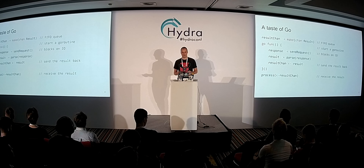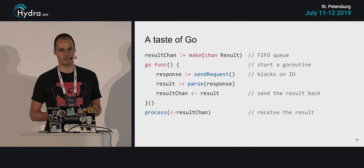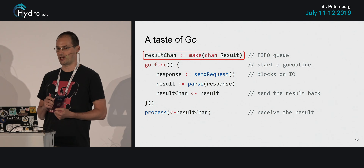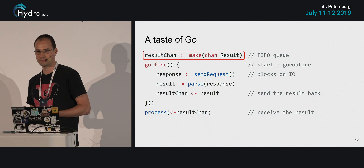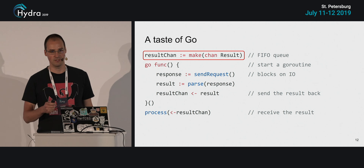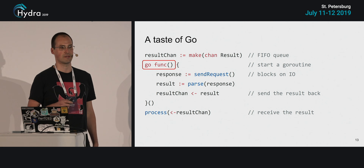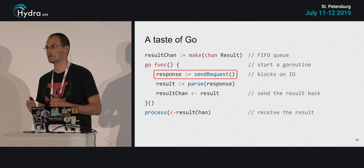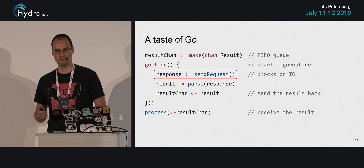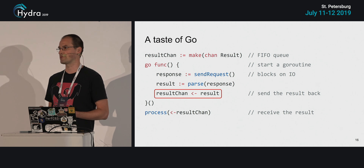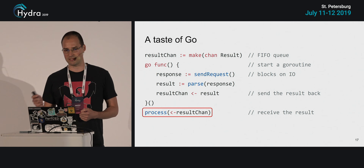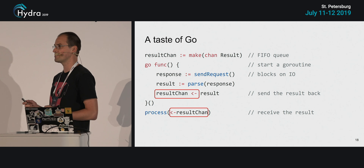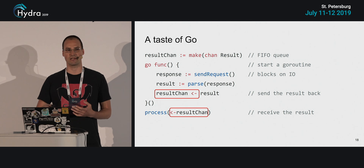To give you a taste of Go, let's look at some real code. On the first line, we create a channel — effectively a FIFO queue — assigned to a result-chain variable. On the second line, we start a GoRoutine using the 'go' keyword, which is our only API. Inside the GoRoutine, we send a request to a server (which may block on the network), parse the response, and send the result to the result channel. The main GoRoutine receives and processes the result. Importantly, receiving from an empty channel blocks a GoRoutine, and a subsequent send will unblock it.